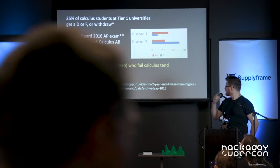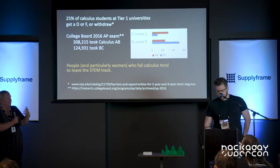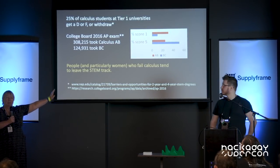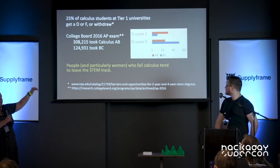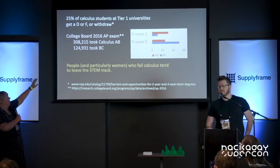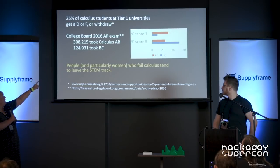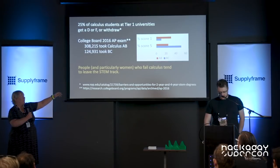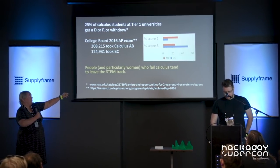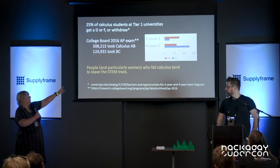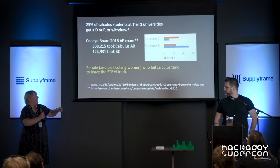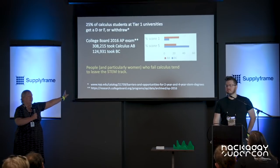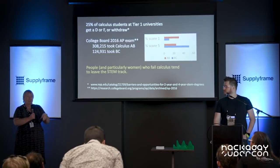So how did that turn out? Currently, 25% of students who take calculus at a Tier 1 university — your Harvards and Stanfords — get a D, an F, or withdraw. About 308,000 people took the AP Calculus AB exam, and roughly half scored a 1, which is basically an F. The critical finding is that people — and particularly women — who fail calculus tend to leave the STEM track forever. They say science isn't for them.